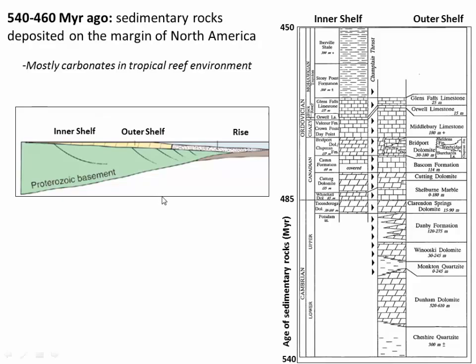Over time the dead organisms and corals formed a sequence of limestones and related rocks that were deposited on the margin of North America. So these are mostly carbonate rocks, and we can think of the stratigraphy in the Champlain Valley in terms of rocks that were deposited on the inner shelf — closer to shore — and then rocks that were deposited on the outer shelf, or further offshore.